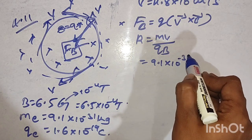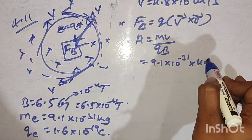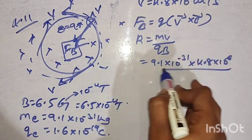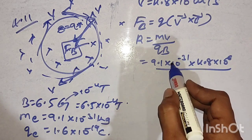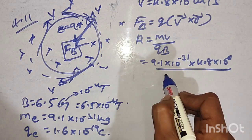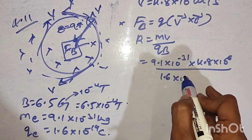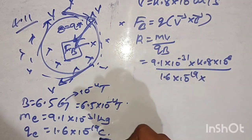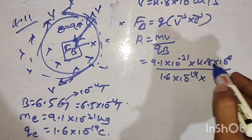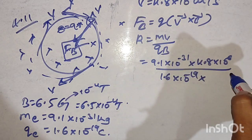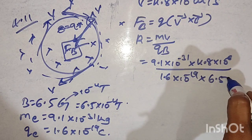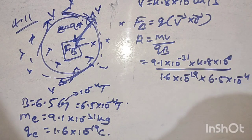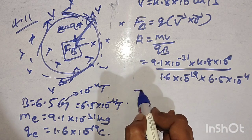Mass of the electron is 9.1 x 10 to the power of minus 31. Velocity is 4.8 x 10 to the power of 6. Divided by Q, that is 1.6 x 10 to the power of minus 19. B magnetic field is 6.5 x 10 to the power of minus 4.